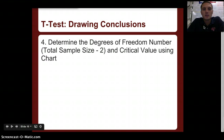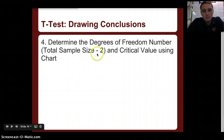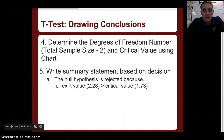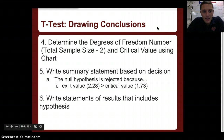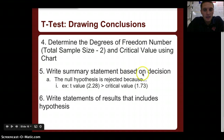The fourth step is to determine the degrees of freedom by adding the total sample sizes of both data sets and subtracting two. We use this to find the critical value on the t-table chart. The fifth step is to write a summary statement based on the decision. For example, if the null hypothesis was rejected, we write: the null hypothesis is rejected because the t-value calculated (2.28) is greater than the critical value (1.73). The final step is to write a full statement of results that includes the hypothesis.